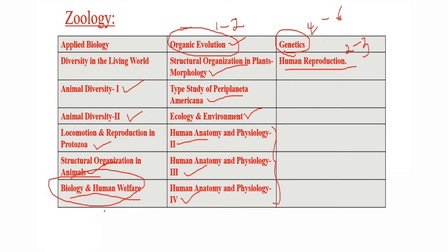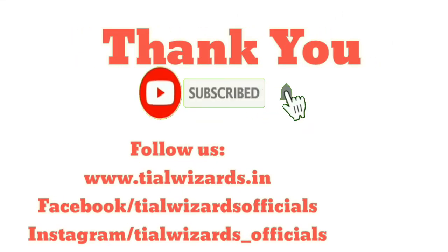If you start a confusion question, you can ask one or two questions. The important question is that you address your confusion. So friends, we have covered the AP EMSet syllabus and other subjects. Visit our website to download it and find out how to prepare a full timetable. This is the total syllabus. Subscribe to our channel, share with your friends, and see you in the next video.